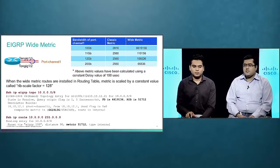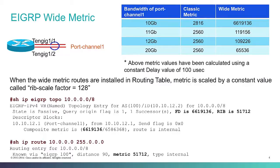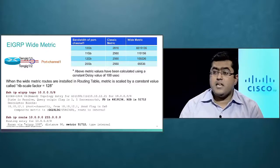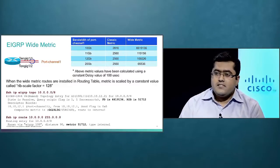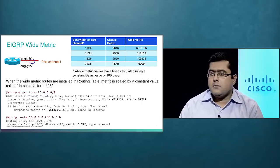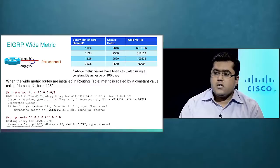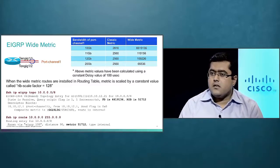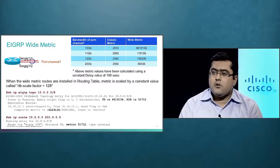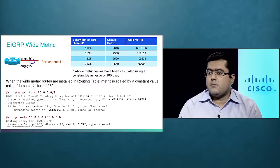Wide metric supports 64-bit metric calculation, whereas legacy supports only 32-bit metric calculation. Since the metric value is 64-bit but the routing table variable is only 32-bit, there is also a concept of a scaling factor, which is used to fit that 64-bit EIGRP metric into the 32-bit routing table metric. Another difference is in representation: in wide metric, delay is represented in picoseconds, whereas in classic metric it is in microseconds.